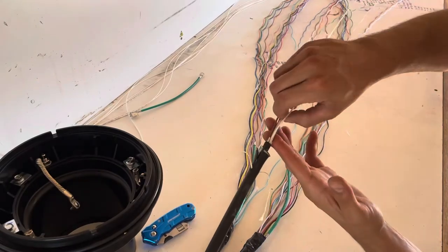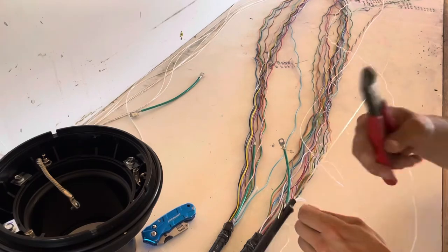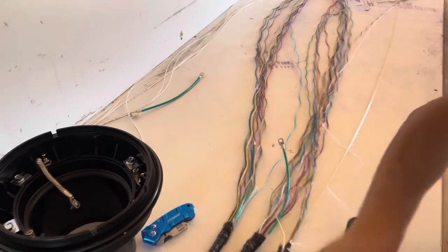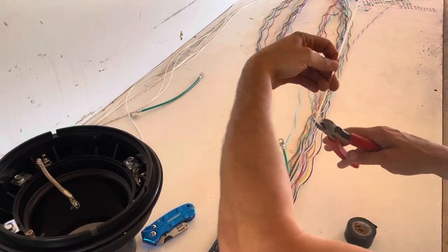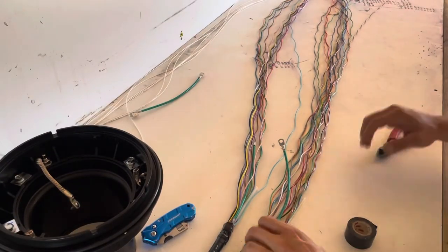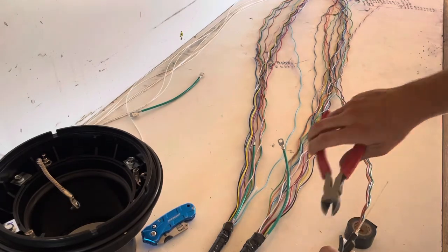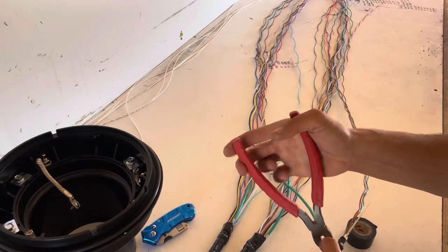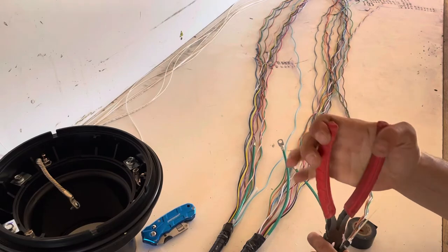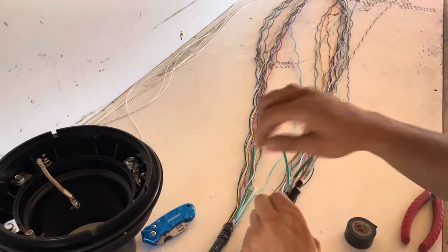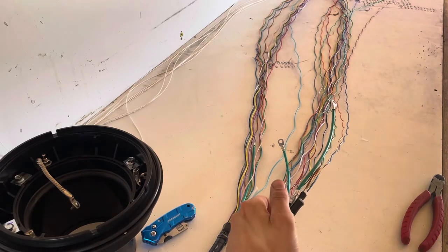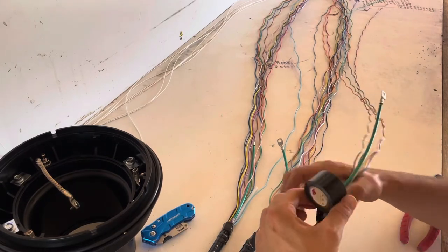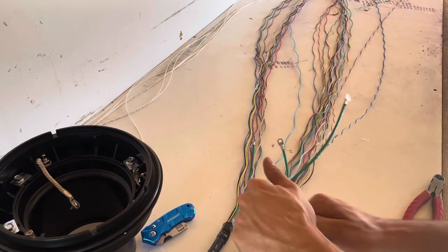Since this is a 48 fiber cable, you're going to have two dead tubes in here that are just plastic, two white ones. You're going to snip them out, get them out of your way. Get this moisture tape out of here and cut your strength member to length. Just go ahead and ground it.